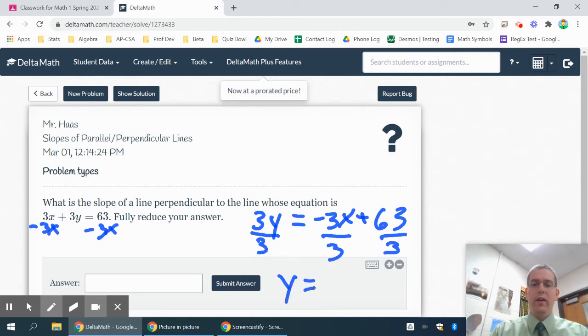And then I will end up dividing everything by 3 because y has to be completely by itself. So y equals negative 1 over 1 x plus 21. The slope is that negative 1 over 1 or just negative 1.